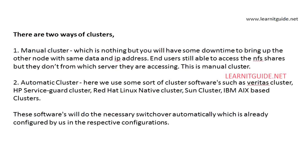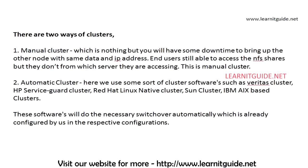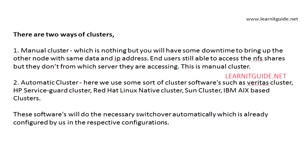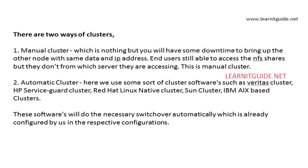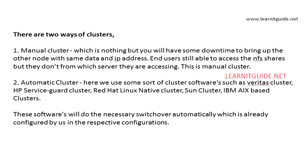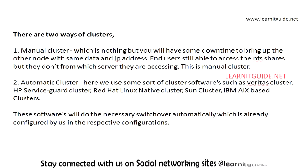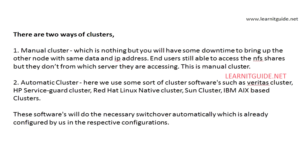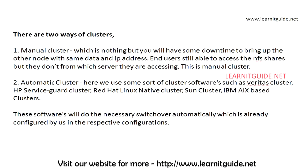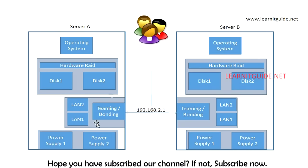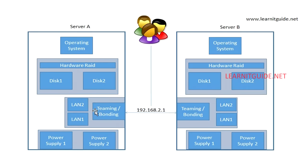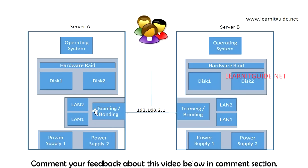There are two ways of clusters: manual cluster and automatic cluster. In a manual cluster, you will have some downtime to bring up the other node with the same data and IP address. End users can still access services like NFS or other applications but don't know from which server. In a manual cluster setup, no special software is used — the second server is an idle server not connected to the primary.